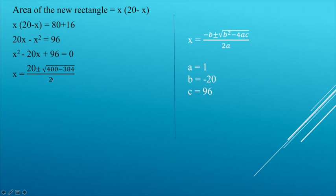This gives 20 plus or minus square root of (400 minus 384), divided by 2, which equals 20 plus or minus square root of 16, divided by 2.